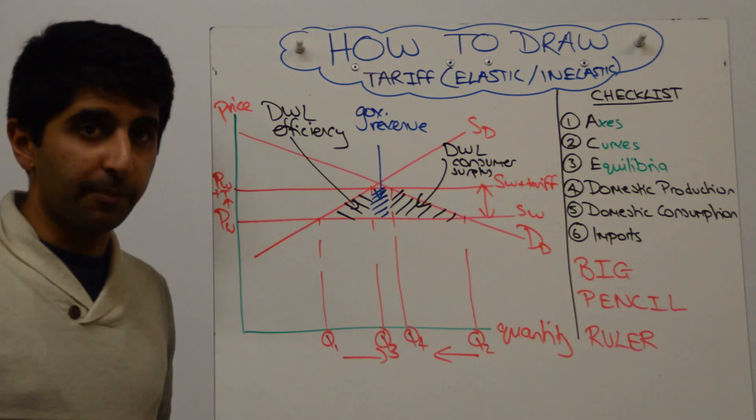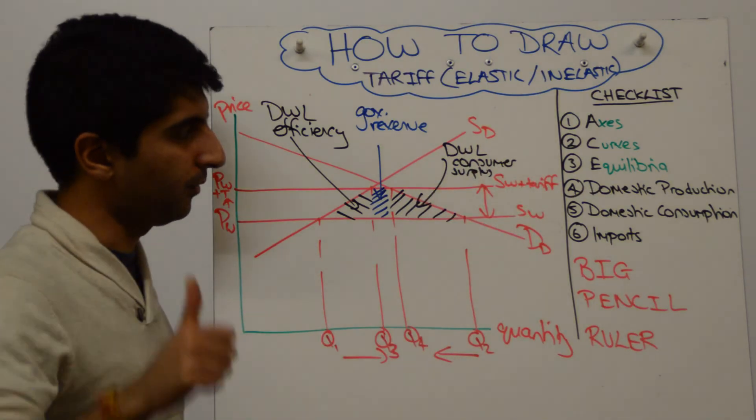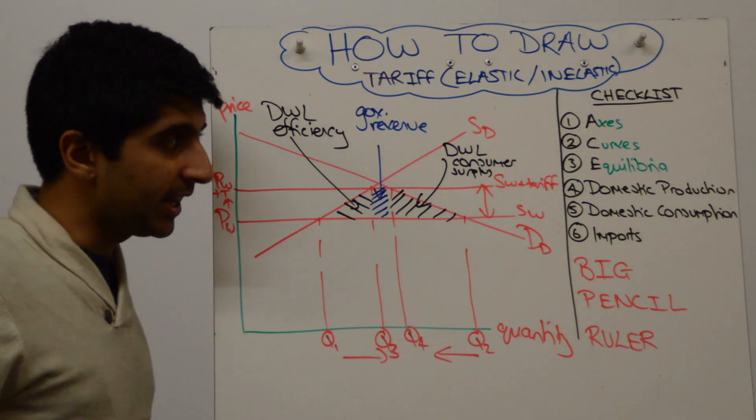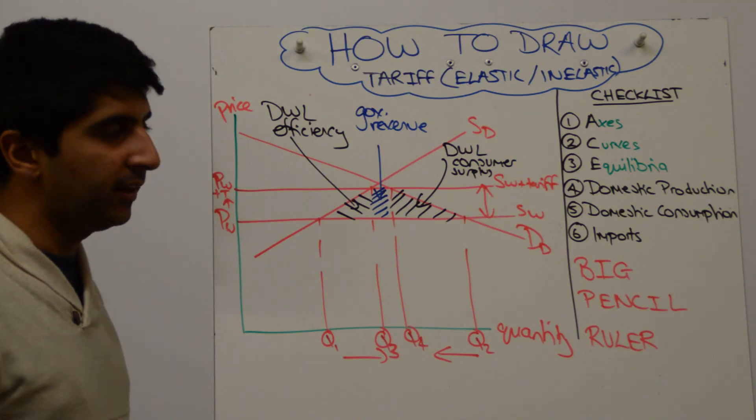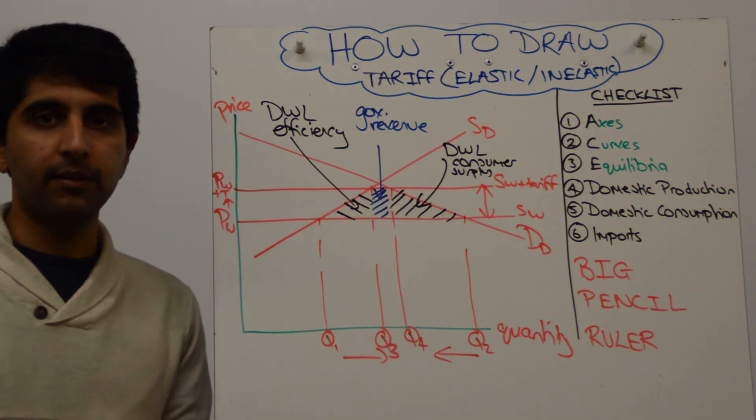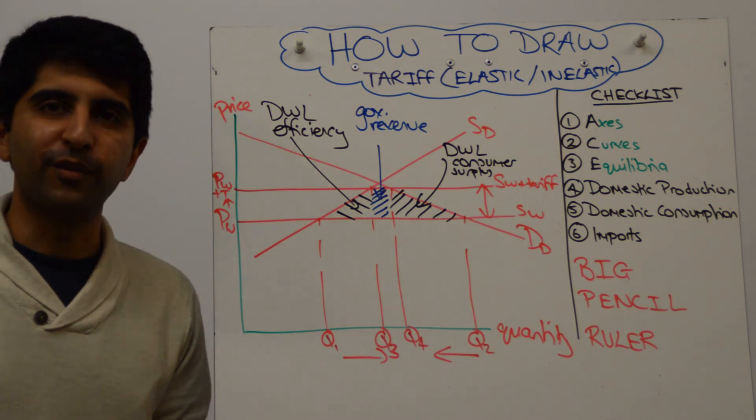Let's go to our checkers for both diagrams. Did we label our axes? Yes, we did. Did we label our curves? Yes, we did. Did we label our equilibrium? You can see here clearly, we definitely did. Did we show clearly the impact on domestic production, domestic consumption, and the level of import? Yes, we did. We also added in these extra three bits. The government revenue, the deadweight loss of consumer surplus, and the deadweight loss of efficiency.